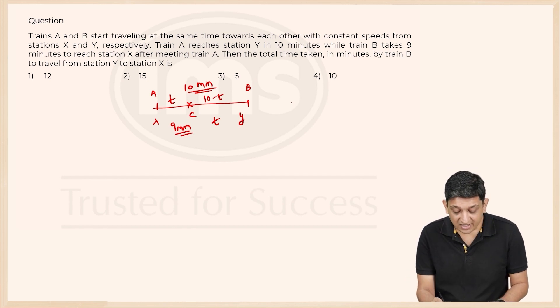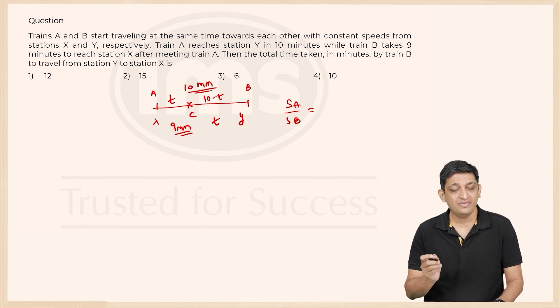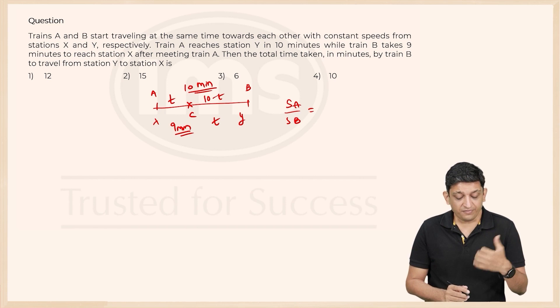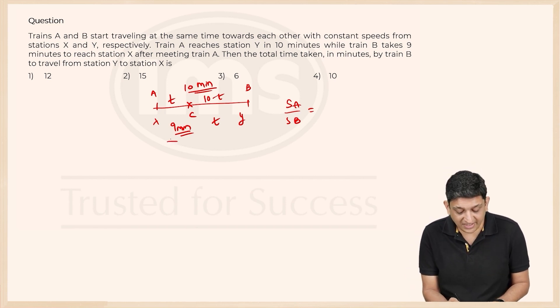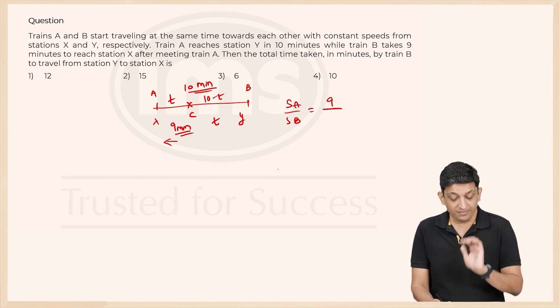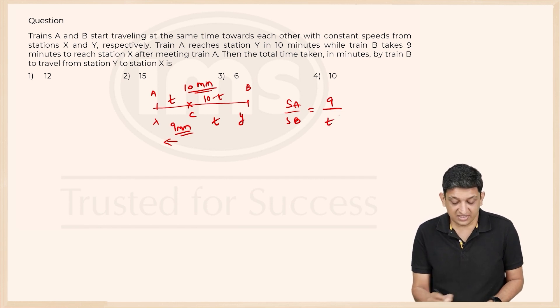So can I say that speed of A upon speed of B, when distance remains the same, is nothing but inverse of the amounts of time taken? So speed of A divided by speed of B will be time taken by train B to go from C to X, that is 9 minutes, divided by time taken by train A to go from X to C, that is T minutes.